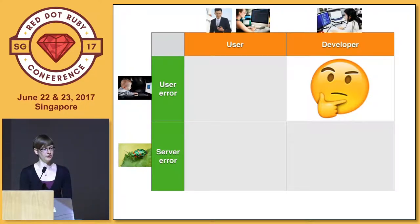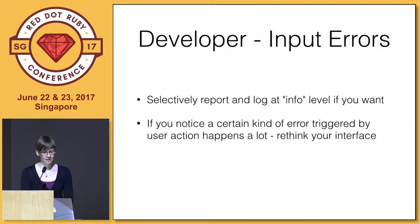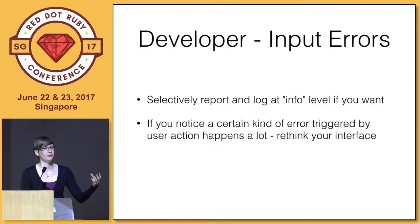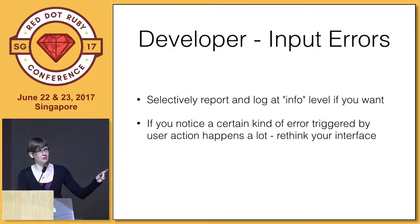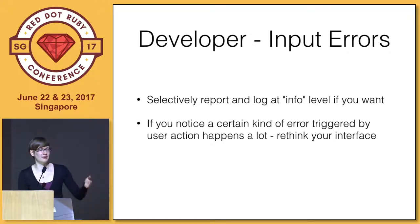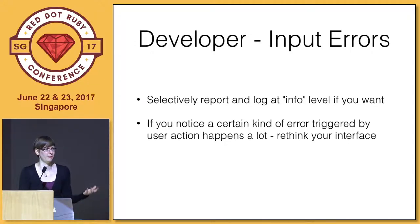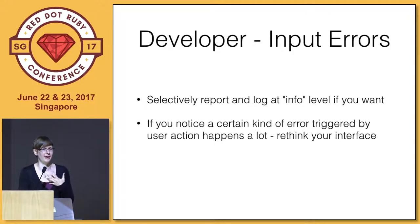What about user errors as a developer? Is that something that interests me at all? Most of the time, I don't really care. However, this is something I've actually experienced on products I've worked on: if you constantly get input about users not being able to do a thing or they always make errors, you can selectively log input errors on an info level to see how often they happen and at which point. And if every second person trying to do something gets it wrong, then I have to rethink my interface — go talk to the UX people to figure out how to actually not make this happen so much.